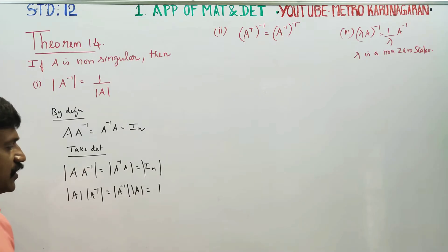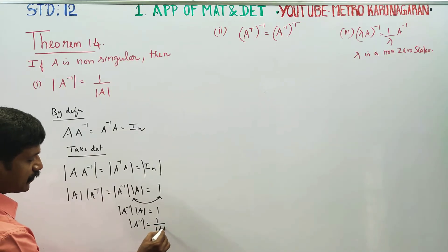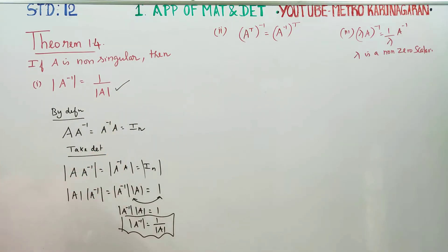Now equating, we get determinant of A inverse times determinant of A equals 1. Therefore, determinant of A inverse equals 1 by determinant of A. This is my first result.